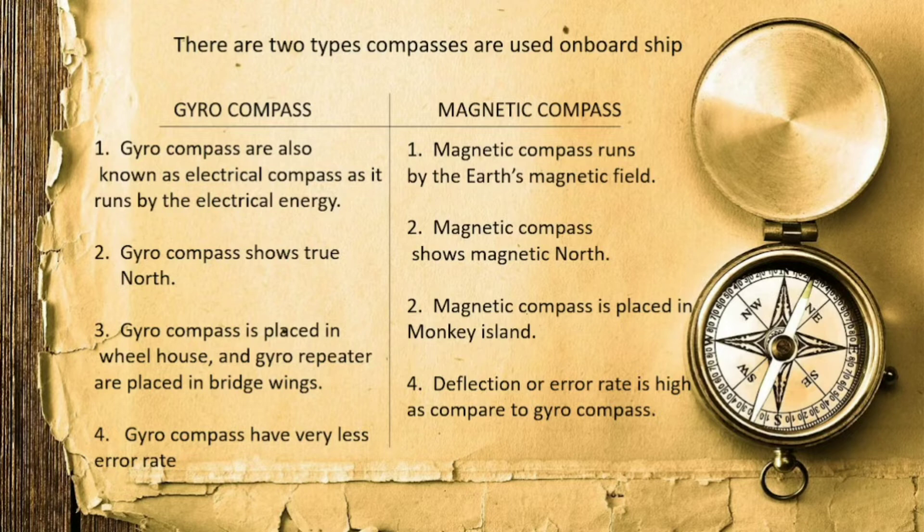The second difference is that the gyro compass indicates true north, whereas the magnetic compass shows magnetic north. True north is indicated by the gyro compass, and magnetic north is shown by the magnetic compass. We will see further details on this.